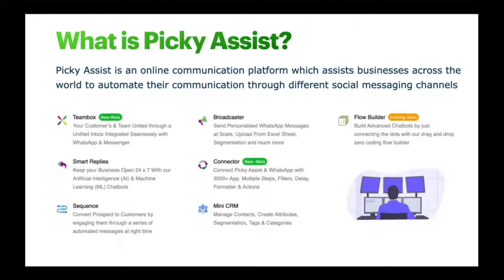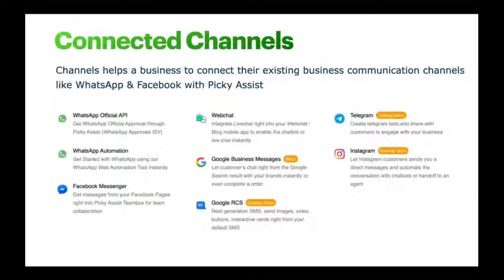We also have a mini CRM that enables managing all contacts and their attributes, and segmenting them with tags or categories. There's an upcoming product — a Flow Builder for creating advanced chatbots — scheduled to launch in the next one or two months. Currently, Picky Assist focuses on emerging channels like WhatsApp, Facebook Messenger, and Instagram, and is continuously integrating more channels such as Google Business Messages and Telegram.